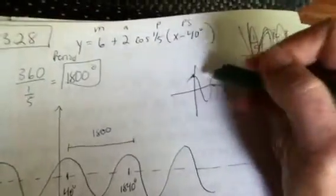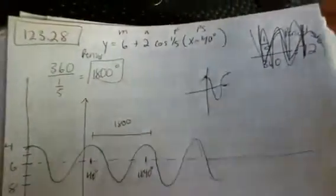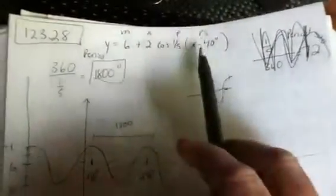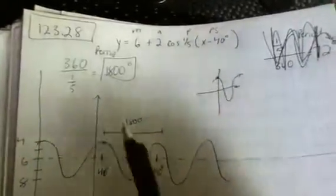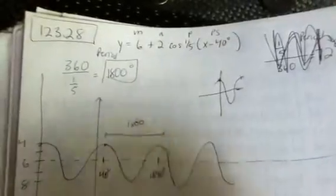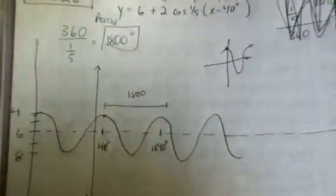So from there to there is one cycle. I just need to make sure I start where my high point is at 40, and then end it at 40 plus whatever the period is.